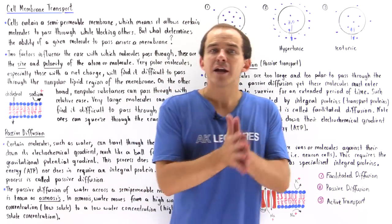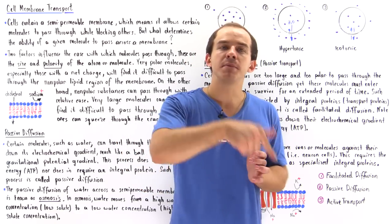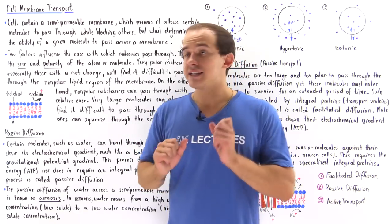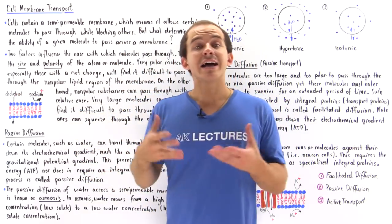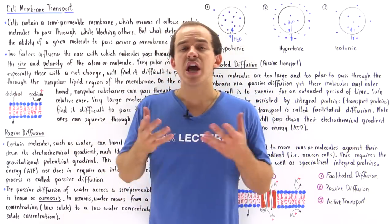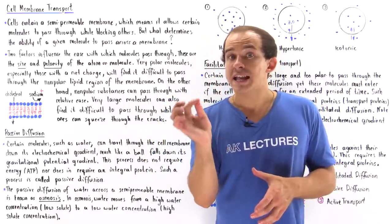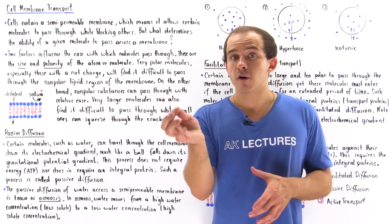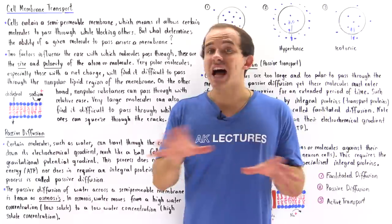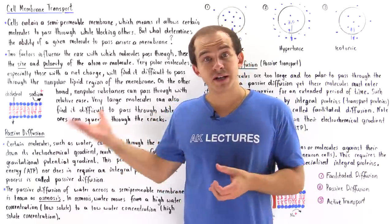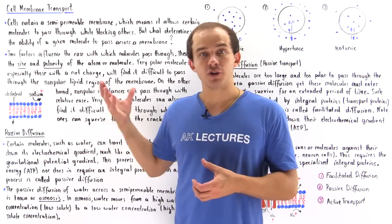Nonpolar molecules, no matter how large, will be able to move across. That's exactly why cholesterol, which is a large molecule, has no problem moving across the cell membrane. But even a very small atom that has a full positive or full negative charge, such as the sodium atom, will not be able to move across because it is very polar.